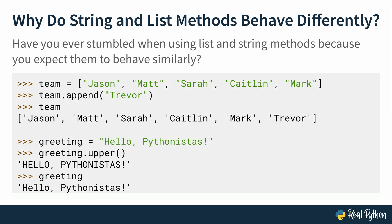When you've compared string and list methods, you may have noticed some difference in their behavior. For example, if you have the same list team as before and then you append a new team member — let's say Trevor has joined the team — you say team.append with the string 'Trevor'. The list team has changed; Trevor is added to the list. But then you try something similar with the string greeting, which says 'Hello, Pythonistas', and you call greeting.upper.